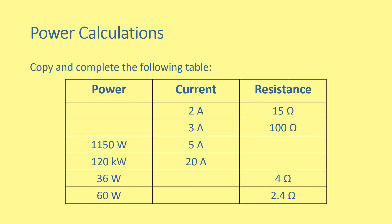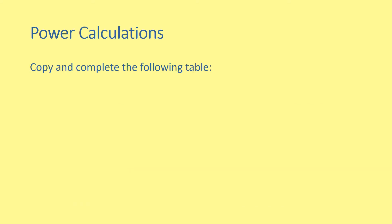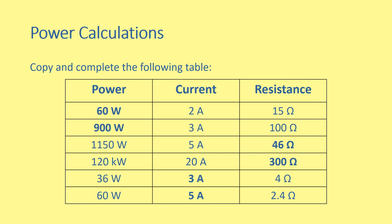Here's a table containing some values of current and resistance. By completing this table, you'll gain experience in using P equals I squared R. Have a shot, pause the video, and then solutions will be on the next slide. Here are the solutions. If you didn't get any of them correct, recheck your calculations and try again.